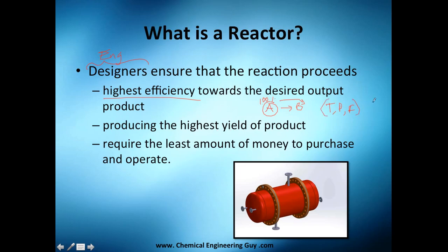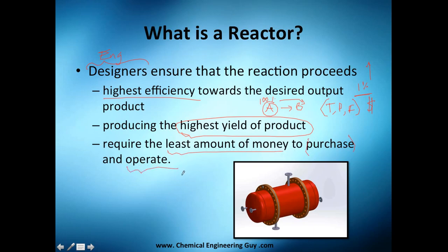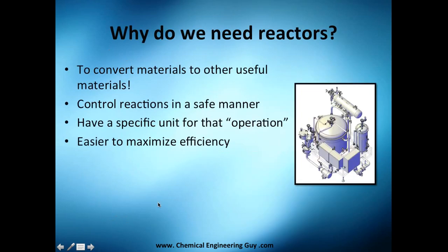Everything is based on economics. If increasing yield by 1% requires investing one million dollars, you need to check if that 1% is worth it. You need the least amount of money both to purchase and to operate the reactor, because operation involves personnel, cleaning, temperature control, heating, cooling, piping, pumping, and compression.